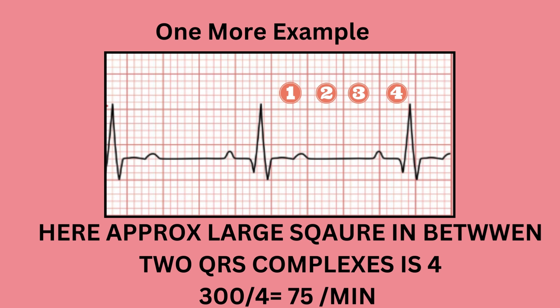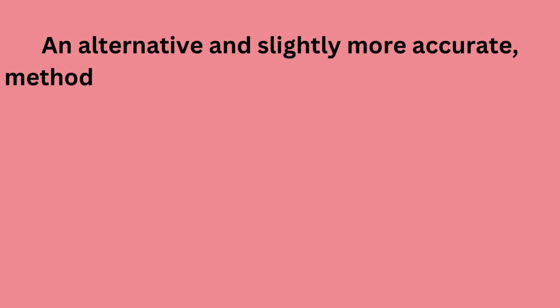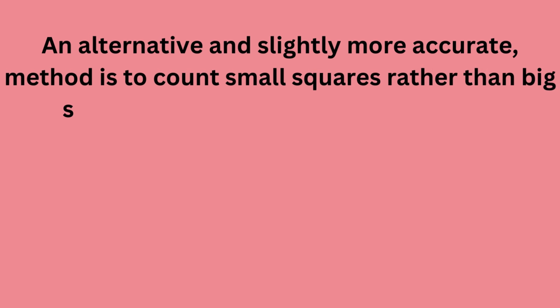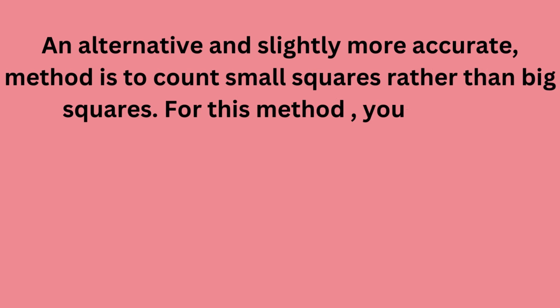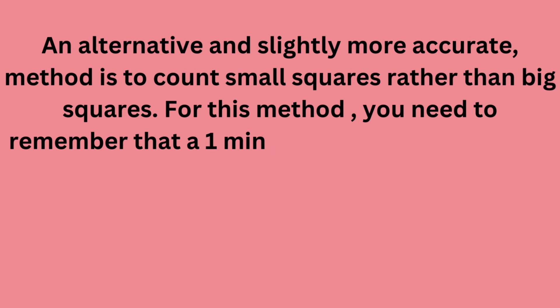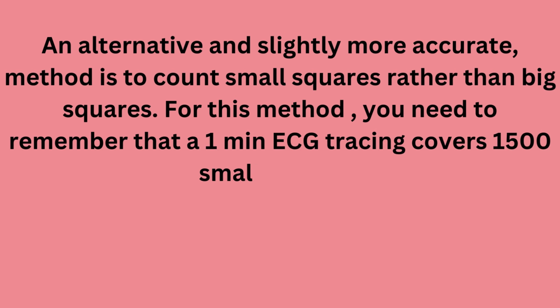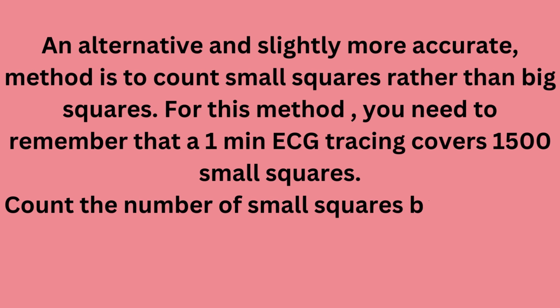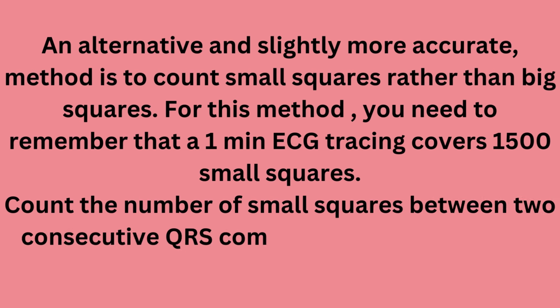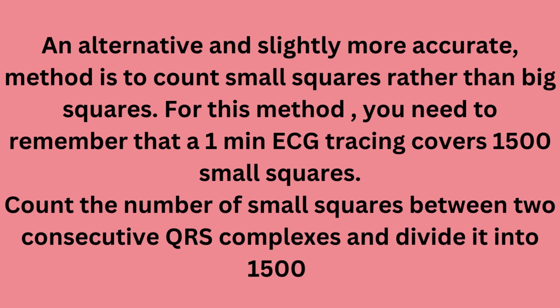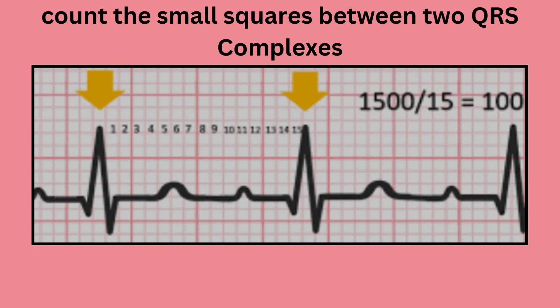An alternative and slightly more accurate method is to count small squares rather than big squares. For this method, you need to remember that a 1 minute ECG tracing covers 1500 small squares. Count the number of small squares between 2 consecutive QRS complexes and divide it into 1500. In this ECG, there are 15 small squares between 2 QRS complexes, therefore 1500 divided by 15, i.e. 100 per minute, is the heart rate.